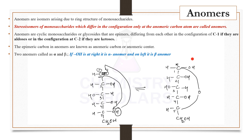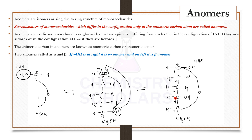What happens is that carbon one was not an asymmetric carbon atom in the open chain, but after cyclization it becomes an asymmetric carbon atom because it is now attached to four different groups. One possibility is that the OH goes on the right-hand side, and the other possibility is that OH goes on the left-hand side, with the rest of the structure remaining the same. These are called anomers, and carbon one — where the configuration has changed — is called the anomeric carbon atom. Anomers arise due to ring structures of monosaccharides; the open chain is the Fischer projection and the ring form is the Haworth projection formula.